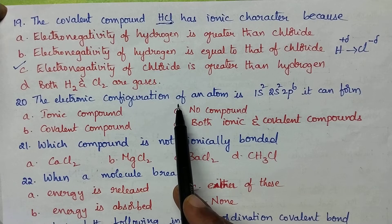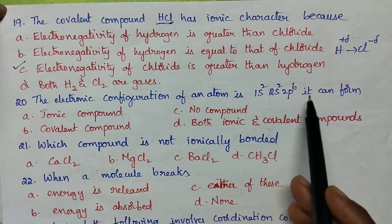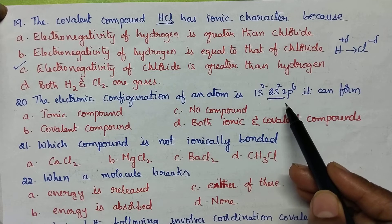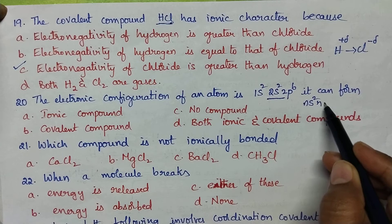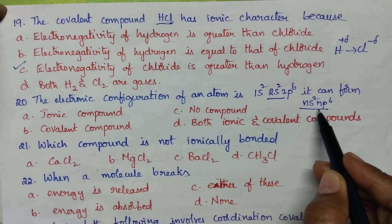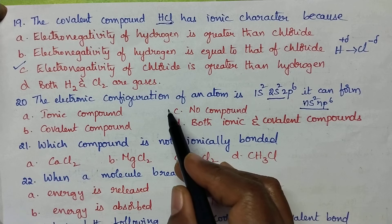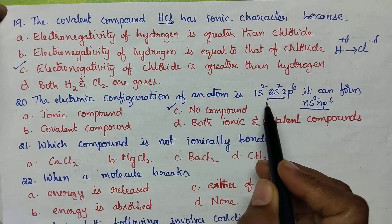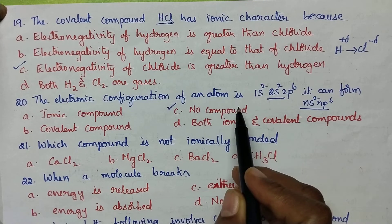The electronic configuration of an atom is 1s², 2s², 2p⁶ — it can form: carefully observing the outermost orbit configuration, it is similar to ns²p⁶, which is the inert gas configuration. As a result, these elements will not form any compound. So option C is the right answer — an atom with configuration 1s², 2s², 2p⁶ will not form any compound.